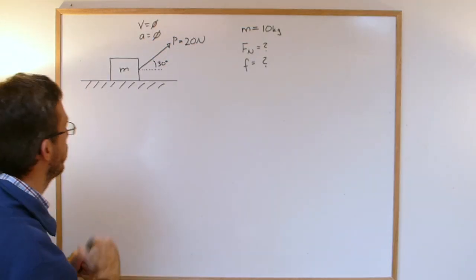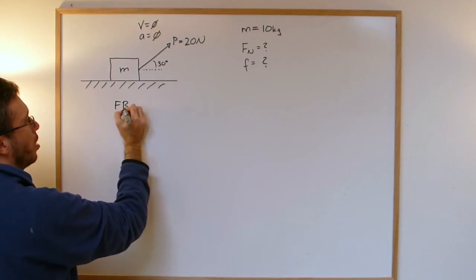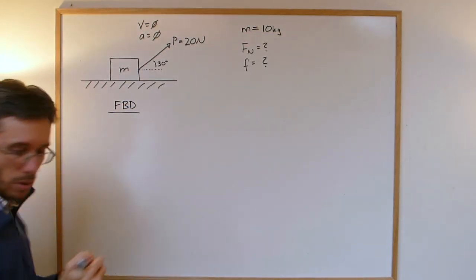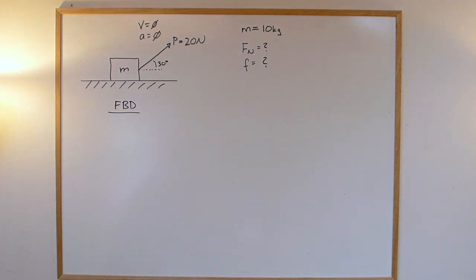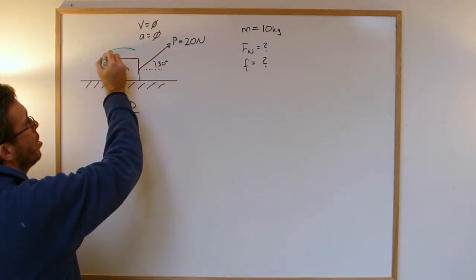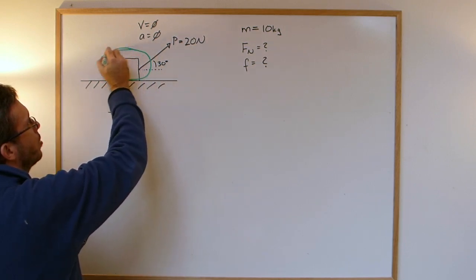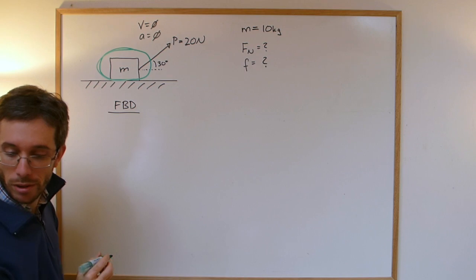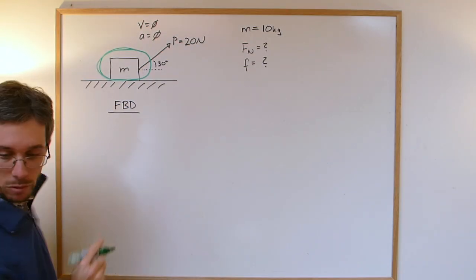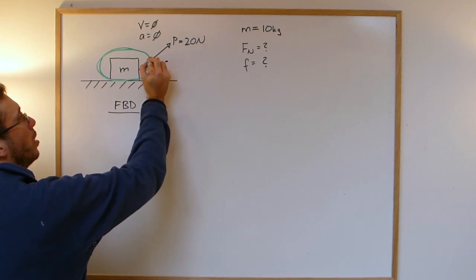So the first step is always to do the free body diagram, FBD, free body diagram. What do we do in the free body diagram? We are isolating what we're interested in and we're cutting it out of the environment and wherever I cut I will have some force acting. For example here I had a force.